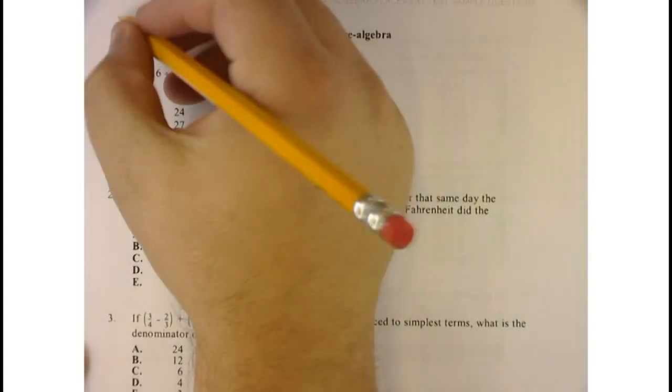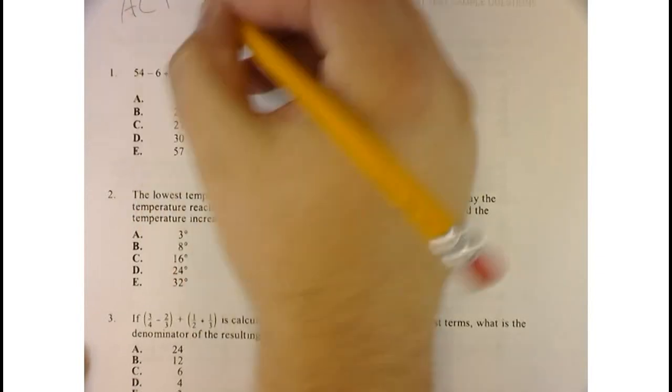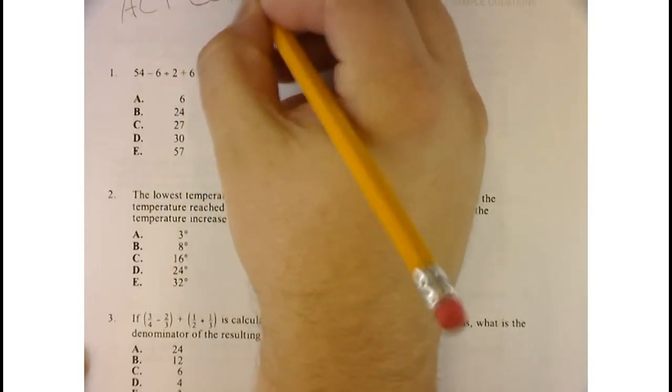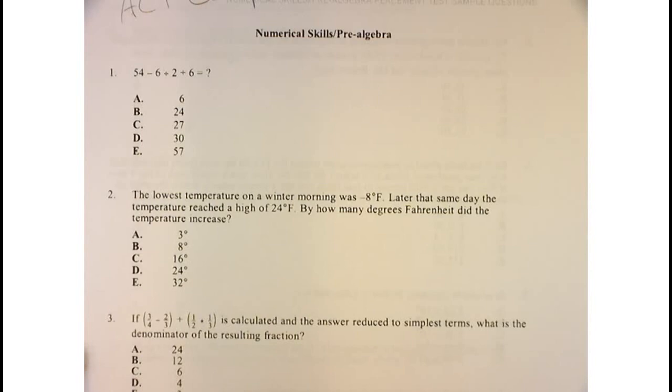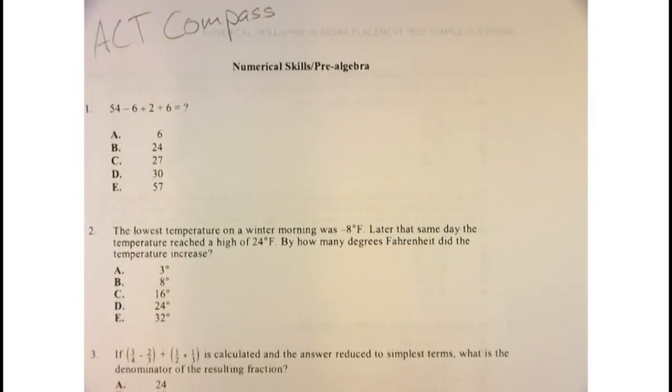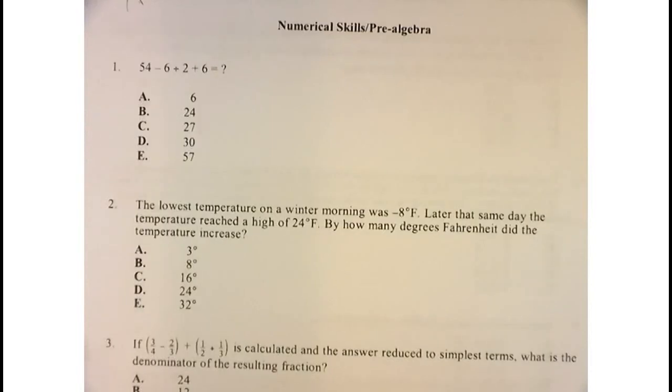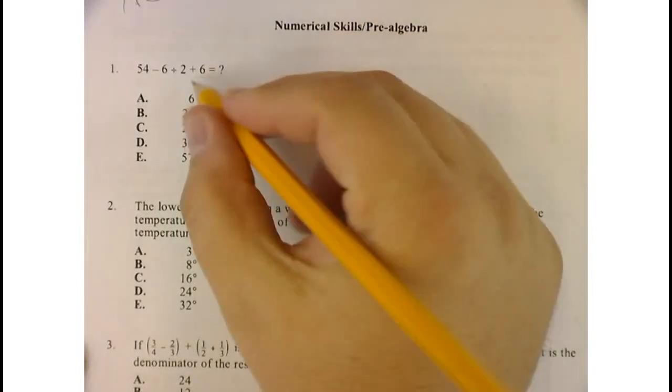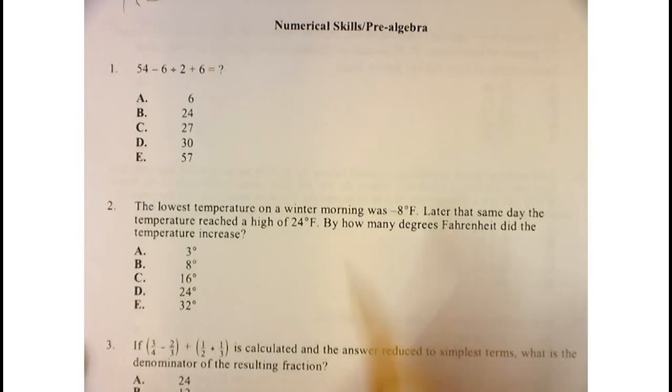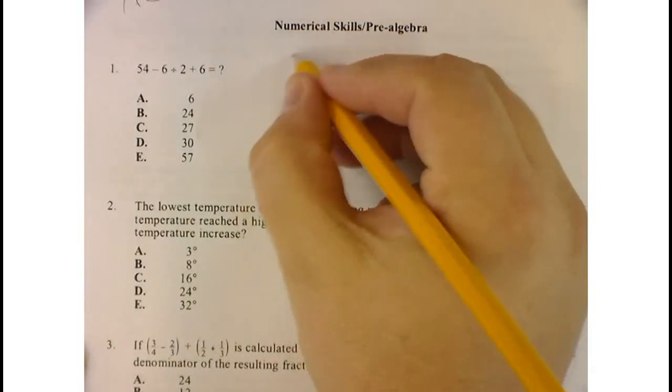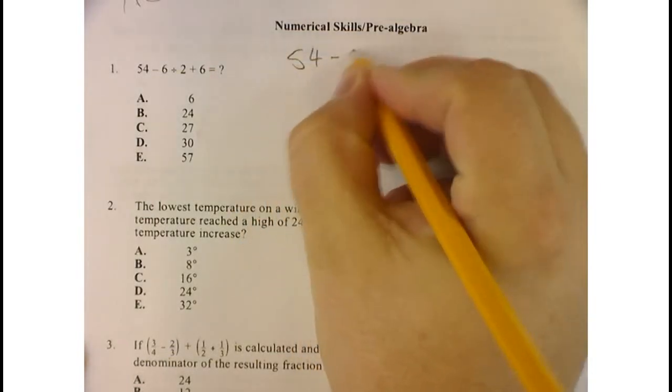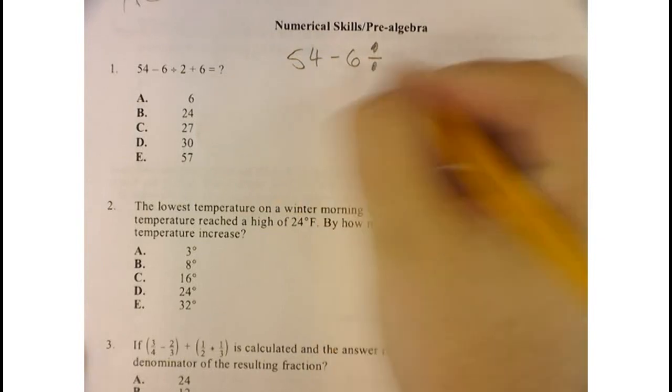All right, so this is the ACT Compass exam review, and what we're going to do is just try to crank through some of these math problems and get the right answers and see how we do. So this is right off the ACT website. I have this problem here, and I'm going to write it out. 54 minus 6 divided by 2 plus 6.